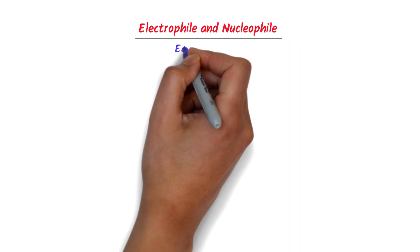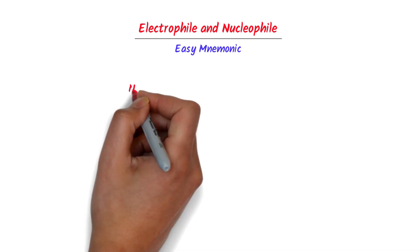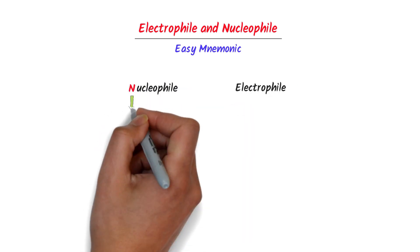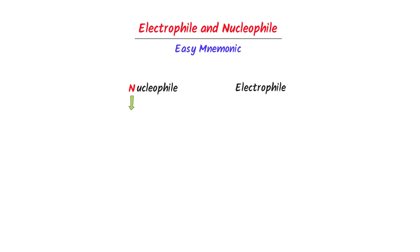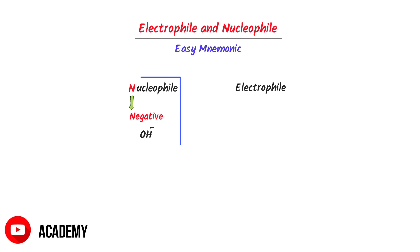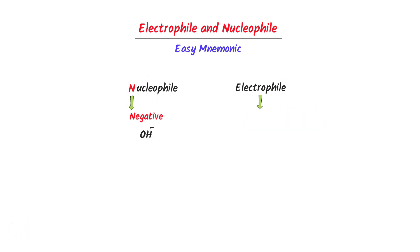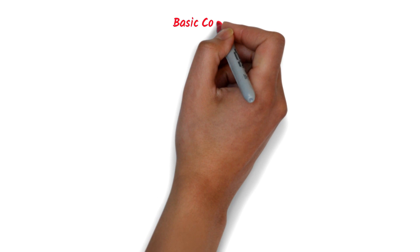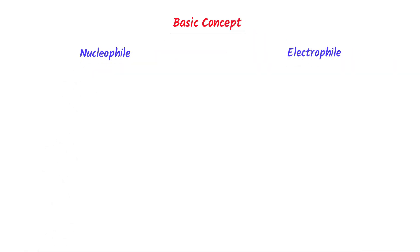Electrophile and nucleophile. Firstly, let me teach you one easy mnemonic. I write nucleophile and electrophile. Now, the N in nucleophile stands for negative charge. So nucleophile is a negative species, like hydroxide ion. Now if nucleophile is a negative species, the electrophile being opposite is a positive species, like hydrogen ion. Remember this N in nucleophile and it will start the whole story. Now let me teach you the fundamental concept of nucleophile and electrophile.